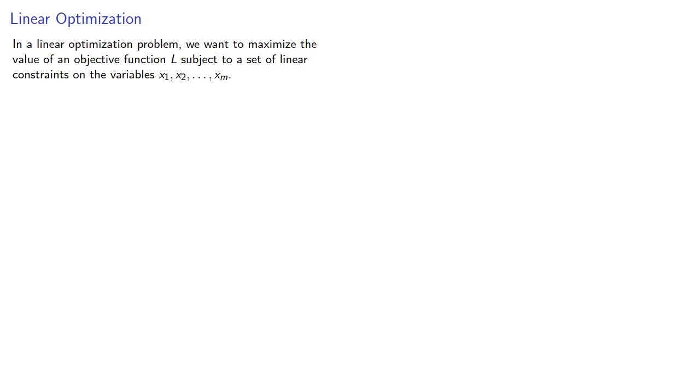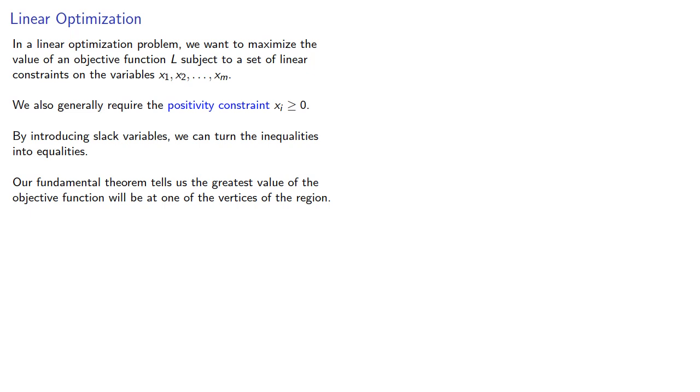In the linear optimization problem, we want to maximize the value of an objective function L subject to a set of linear constraints on the variables x1 through xm. We also generally require the positivity constraint. By introducing slack variables, we can turn the inequalities into equalities, and our fundamental theorem tells us the greatest value of the objective function will be found at one of the vertices of the region, which corresponds to the solutions where the free variables are all zero and all slack variables are non-negative.